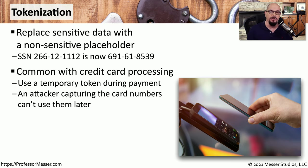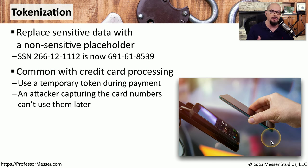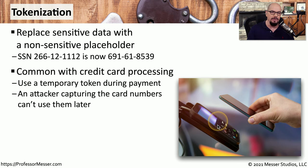You may use tokenization many times a day and not even realize it. It's commonly used with credit card processing, especially if you're using your mobile phone or smartwatch to pay for goods at checkout. This Apple Pay or Google Pay process doesn't actually send your credit card number over the NFC connection and through the network. Instead, it uses a token of your credit card number, which means if somebody captured that for a single transaction, they would not be able to use that credit card information to purchase anything else.